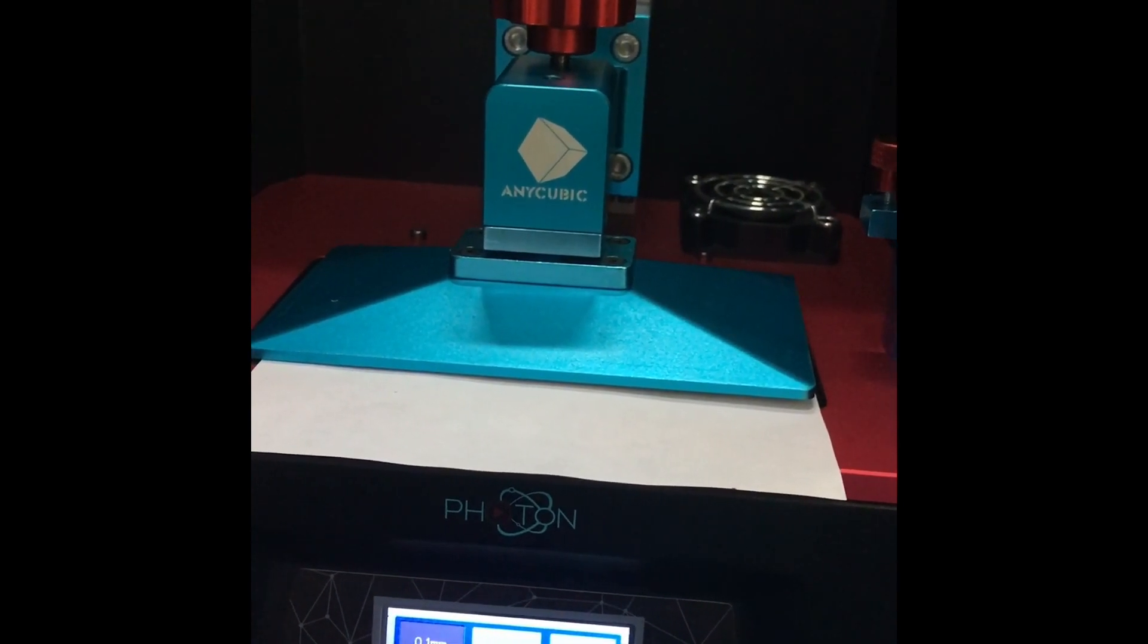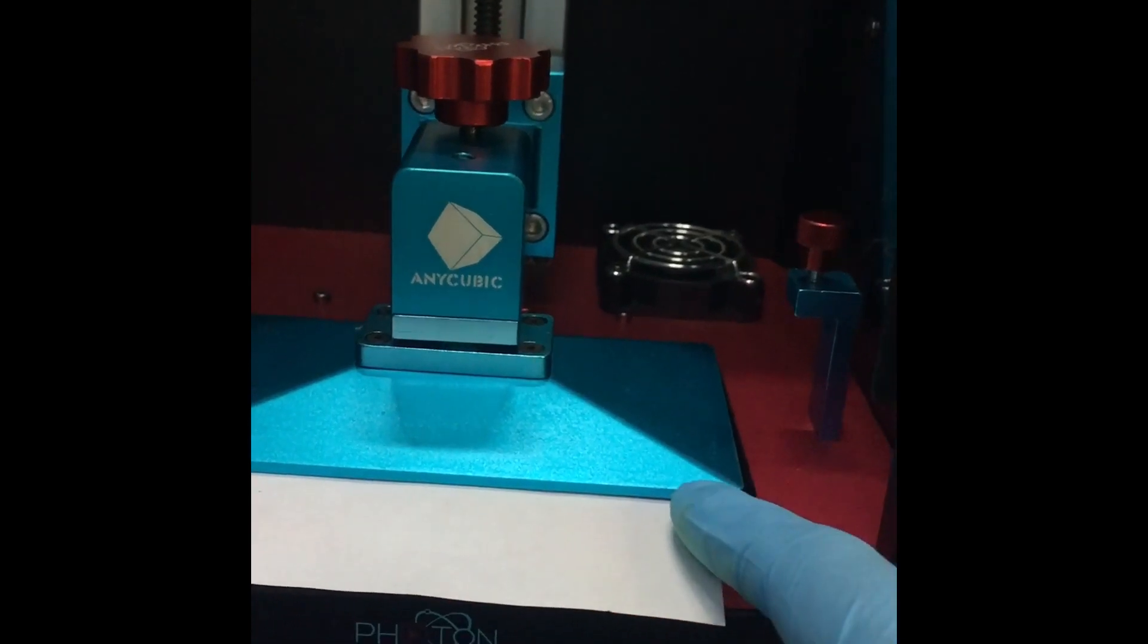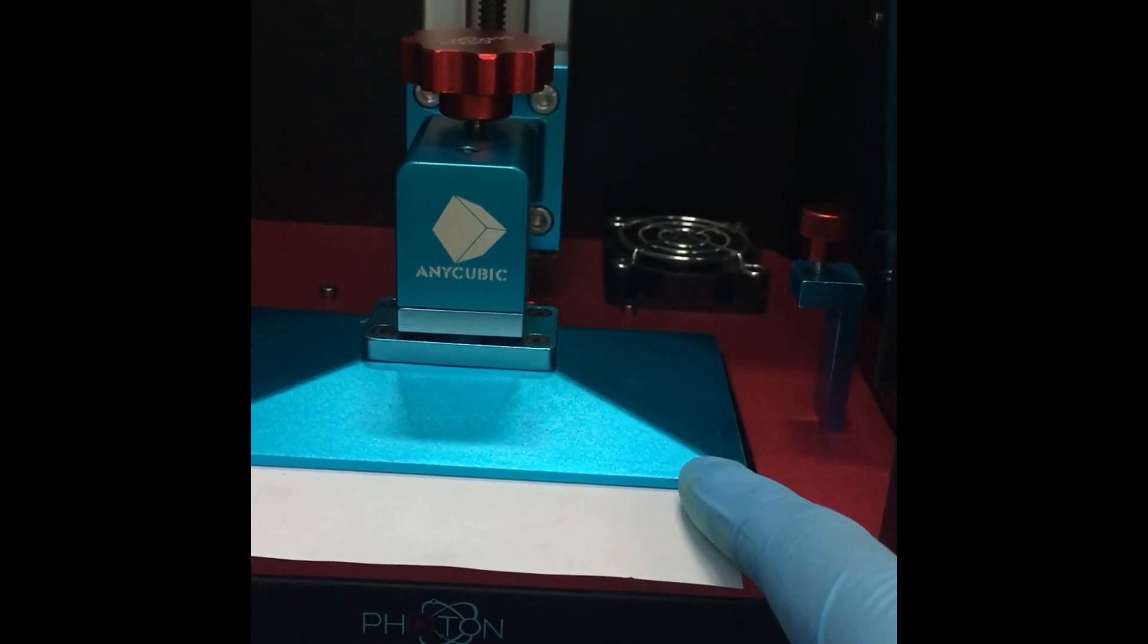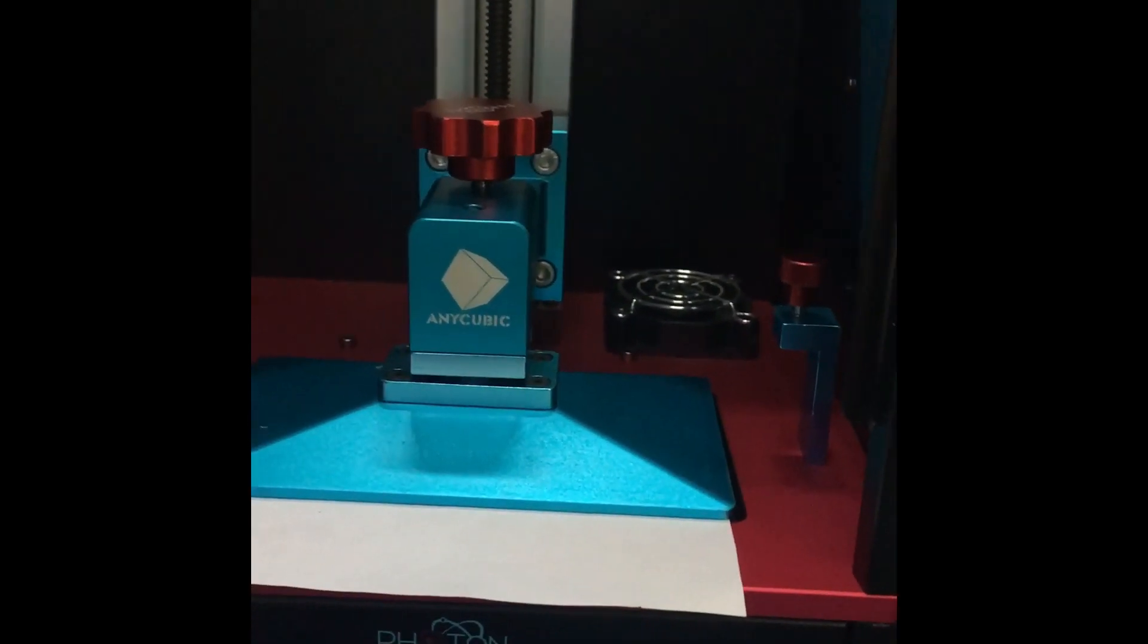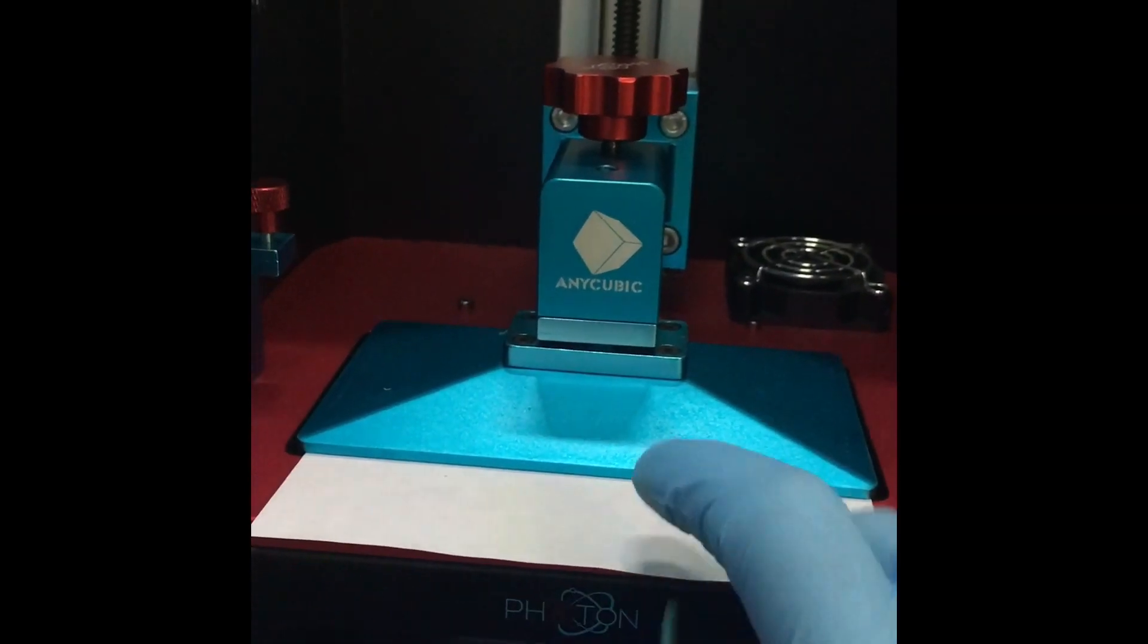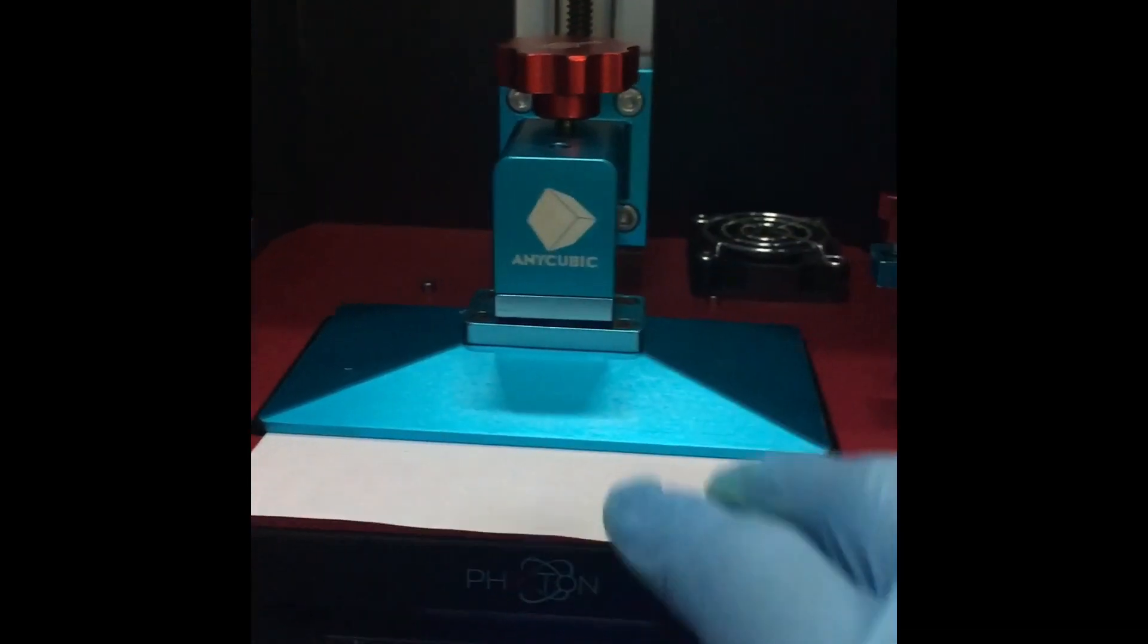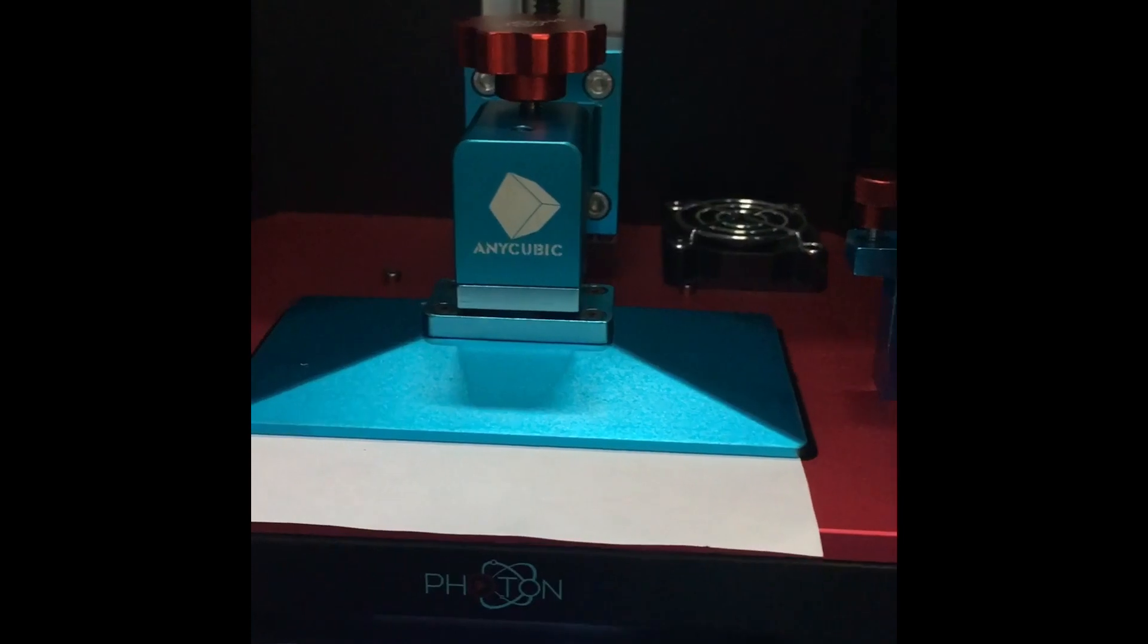We're going to go to the 0.1 steps. We're just going to go down. I'm going to make sure that it's lined up just for aesthetic purposes here. Alright, it's lined up. We're just going to keep going down until the entire plate is flat against the screen. One more.